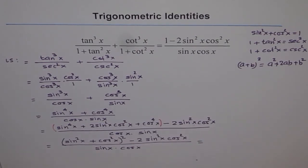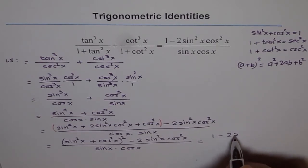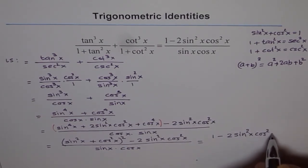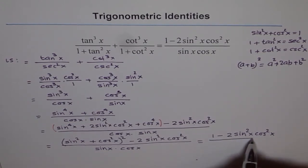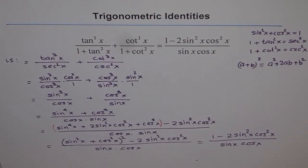Now we apply the Pythagorean identity: sin²x + cos²x = 1. So the expression becomes 1 minus 2sin²x cos²x, divided by sin x cos x. This is a beautiful example where we used all three Pythagorean identities.